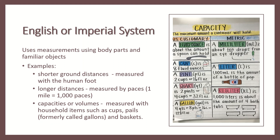Another system of measurement is the English or imperial system. This system originally allowed for discrepancies between measurements obtained by different individuals, but a standard was eventually set to ensure all measurements represented the same amount. In the English or imperial system, body parts or familiar objects are used to gain measurements — shorter ground distances are measured with the human foot, longer distances by paces, and capacities or volumes are measured with household items such as cups, pails, gallons, and baskets.